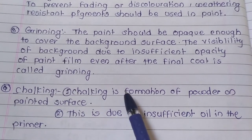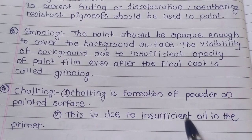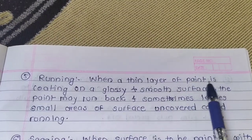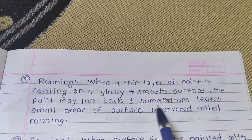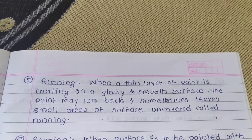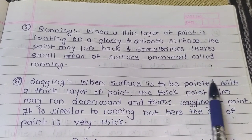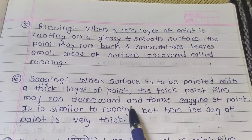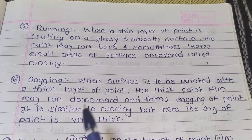Chalking is the formation of powder on the painted surface. This is due to insufficient oil in the primer. Running: when a thin layer of paint is coated on a glossy and smooth surface, the paint may run back and sometimes leaves small areas of the surface uncovered — this is called running. Sagging is similar: when the surface is painted with a thick layer, the thick paint film may run downward and form sagging. It is similar to running but the sag of paint is very thick.